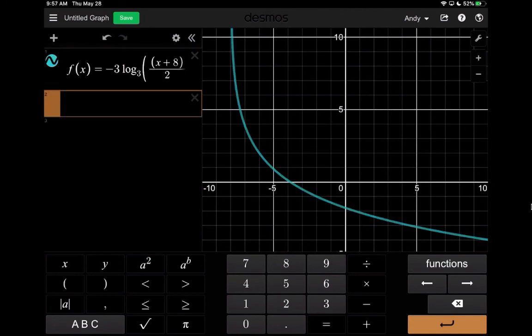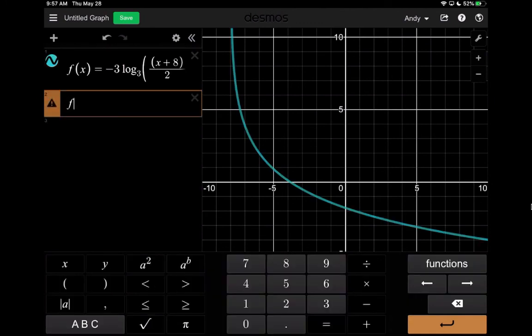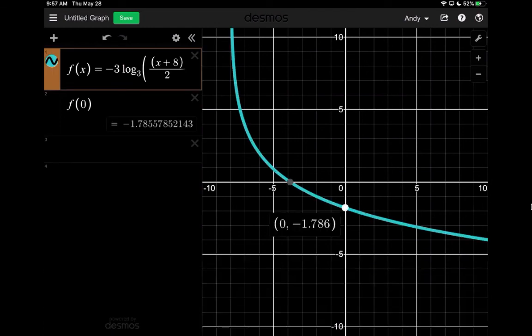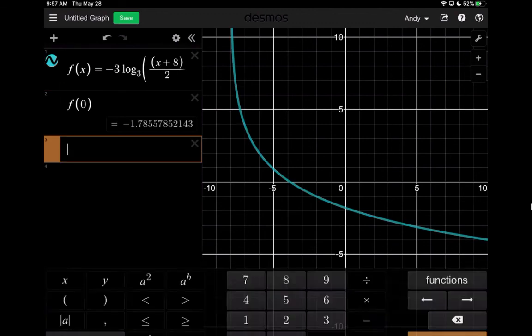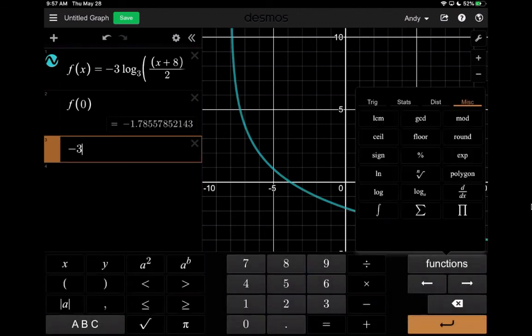What it allows me to do is now I can evaluate specifically f at 0. Or alternatively, what you can do, and you notice that that number corresponds to this here, right? Negative 1.786.